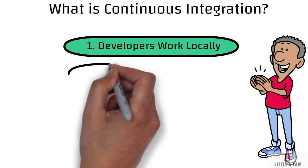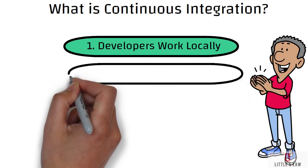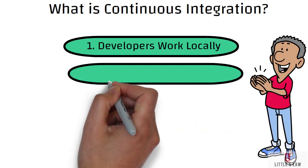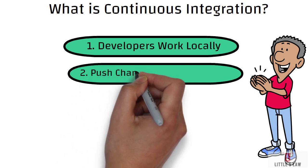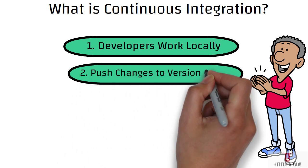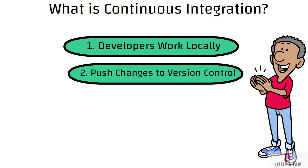The second step is pushing changes to version control. Once developers are satisfied with their changes and ready to integrate them into the main codebase, they push their code to a version control system — for example, it can be Git or GitHub. For example, a developer might commit and push their changes to a feature branch in a Git repository.